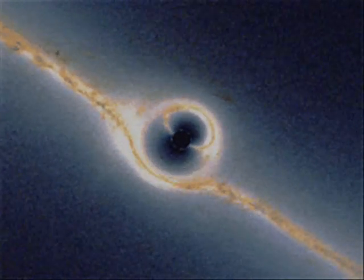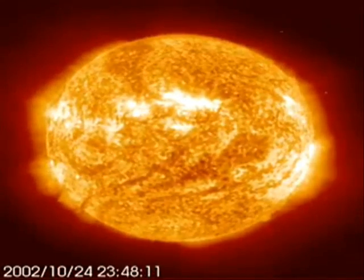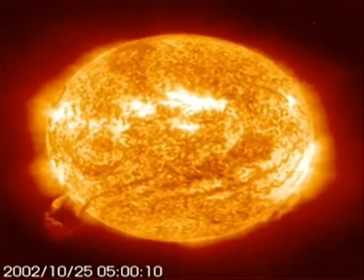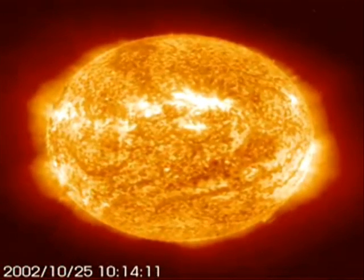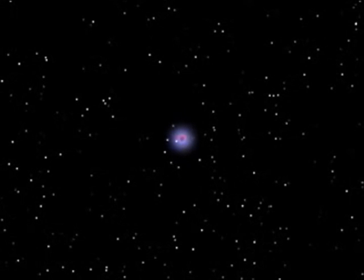To see how black holes form though, we need to look at the lifetimes of stars much bigger than our Sun. Imagine we have a star, let's say at least 15 times bigger than our Sun. Once the star runs out of fuel to keep it shining, it will begin to die.